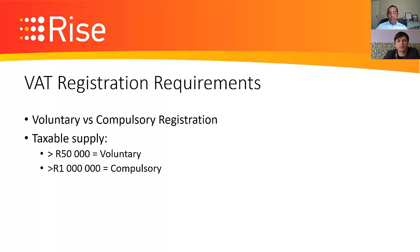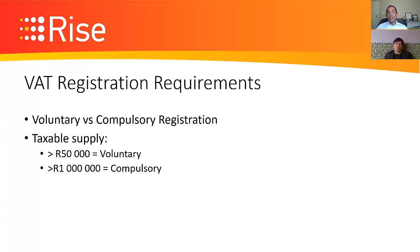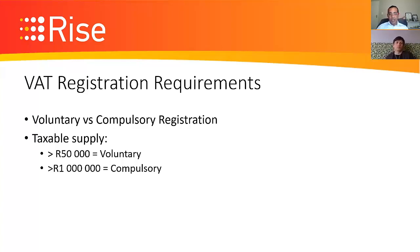Registration is not limited to entity type — whether you're a sole proprietor, CC, PTY Ltd, or any legal entity. Any company doing taxable supply over R1 million must register. Taxable supply means anything that would be VATable if you were registered. If you only sell brown bread, even at R1 million, your taxable supply is zero because it's a non-VATable supply.